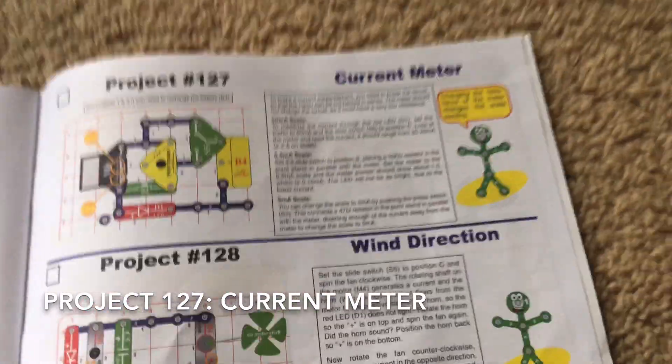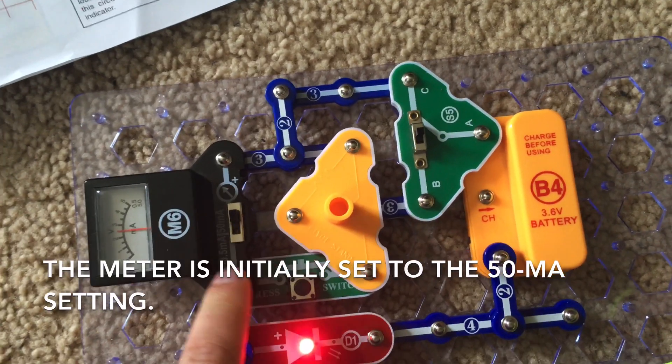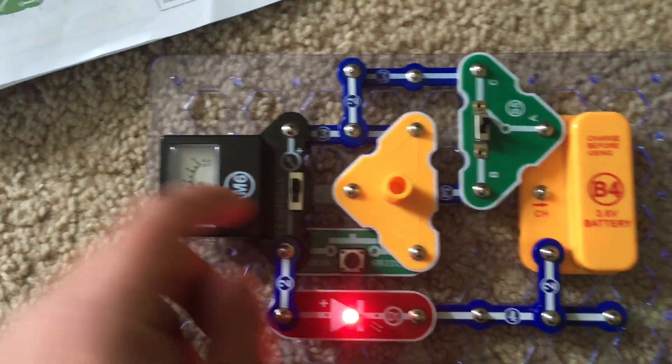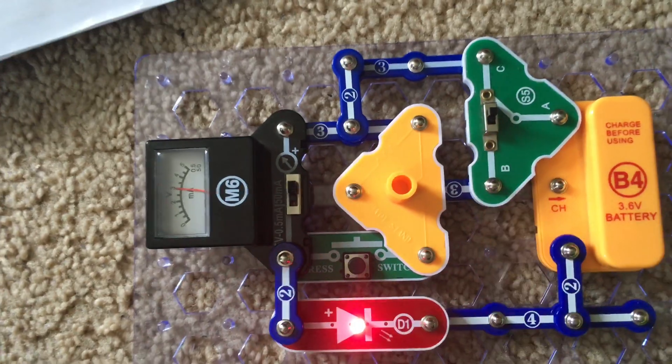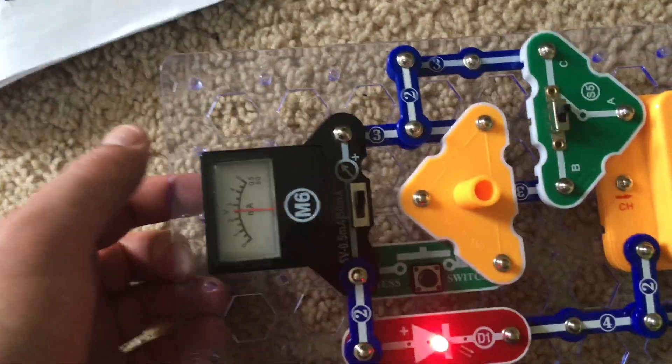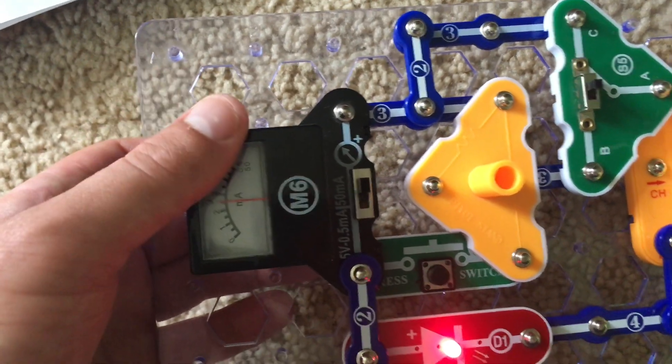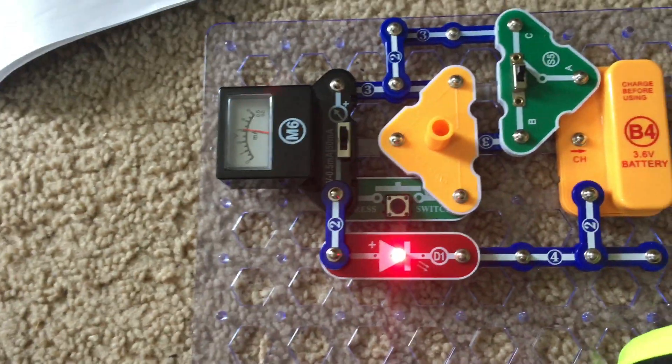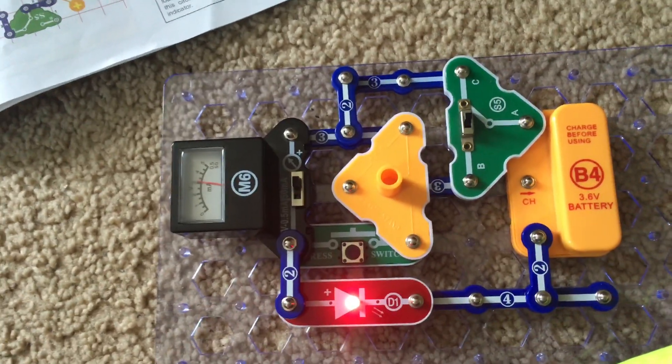Project 127 measures current flowing through the meter and red LED. For the first part, we will set the meter on the 50 milliamp scale and the slide switch to position C. Right now the meter records about 25 milliamps, and 20 to 25 milliamps should be the range that the current reads on this setting.